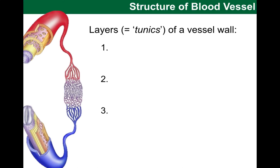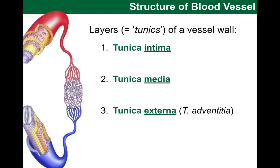Let's look at the general structure of a blood vessel wall. While the blood vessels vary depending on type, they all generally tend to have most of these layers. There are three layers to highlight, known as tunicas. The last one is sometimes also known as tunica adventitia — just do not get too surprised if you see tunica externa and adventitia being used interchangeably.